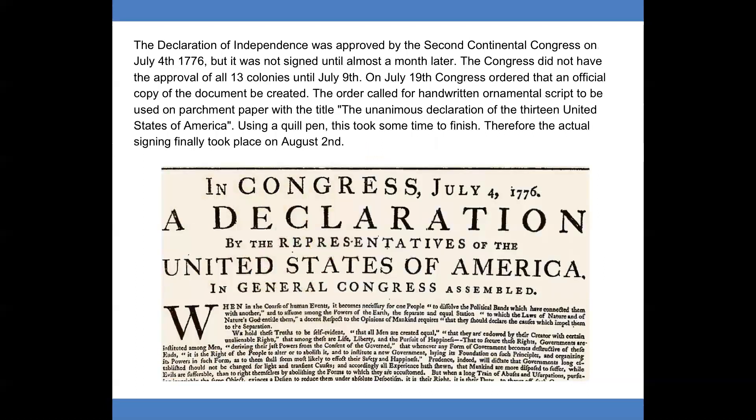The second portion of the document outlines how England had infringed upon those natural rights, thereby justifying the American Revolution to the world. The Declaration of Independence was approved by the Second Continental Congress on July 4, 1776, but it was not signed until almost a month later.